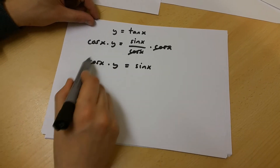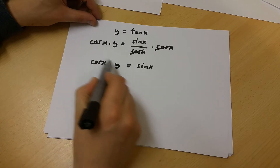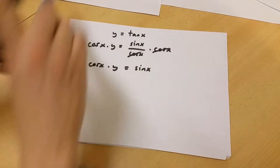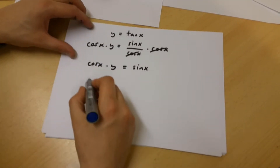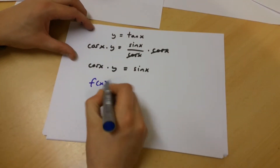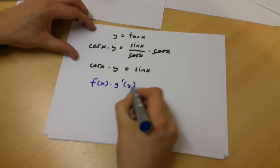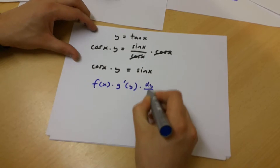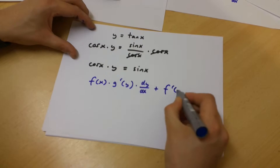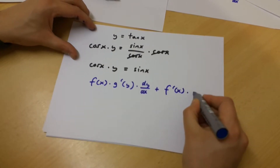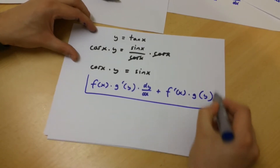I am going to use implicit differentiation to differentiate this side of the equation. The formula I'm going to use is: the function of x multiplied by the derivative of the function of y, multiplied by dy/dx, plus the derivative of the function of x multiplied by the function of y.